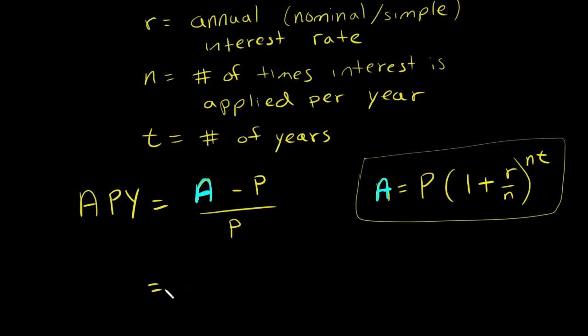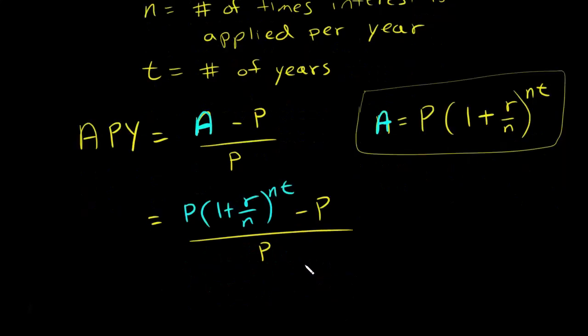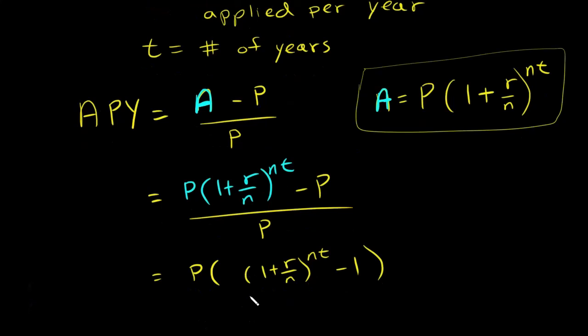Let's go ahead and do that. I'll have P(1 + R/N)^NT minus P, divided by P. In the numerator, I can factor out a P. So I'll have P times [(1 + R/N)^NT - 1], and the denominator is P.